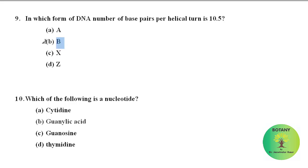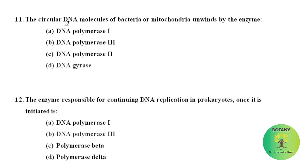In which form of DNA is the number of base pairs per helical turn 10.5? In B-DNA, the base pairs per helical turn is 10.5. Which of the following is a nucleotide? Guanylic acid is a nucleotide.